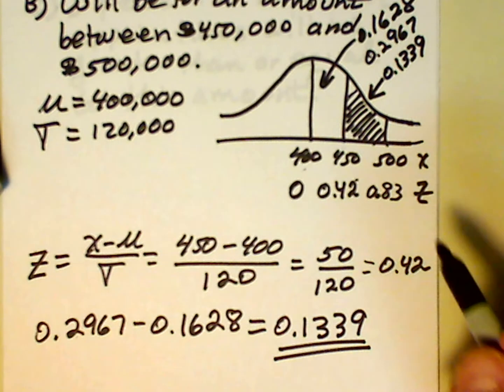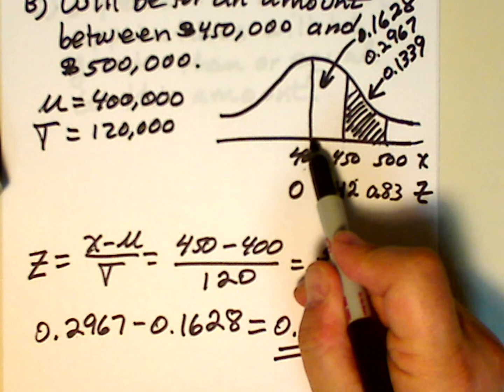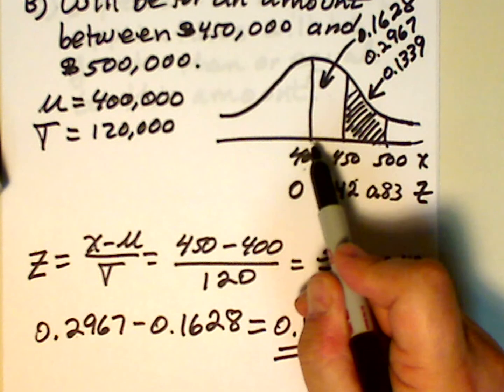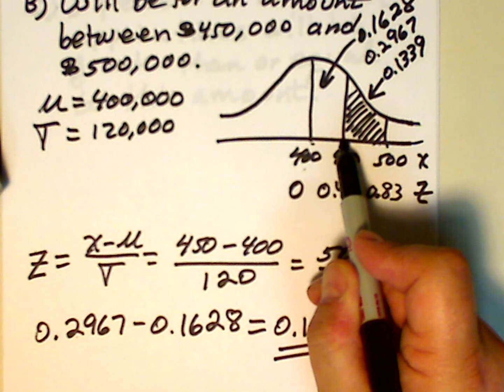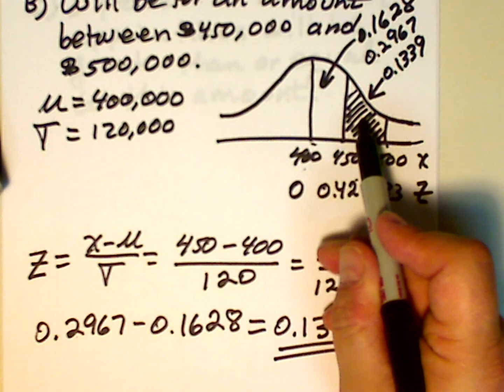So once again, the way we handled this, we took this larger area from 400 to 500, and we subtracted off the smaller area from 400 to 450. And that gave us our shaded region.